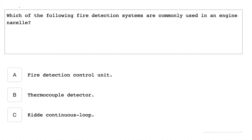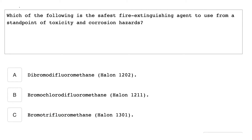Which of the following fire detection systems are commonly used in an engine nacelle? The Kidde continuous loop. Which of the following is the safest fire extinguishing agent to use from a standpoint of toxicity and corrosion hazards? Halon 1301.